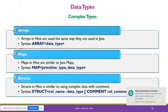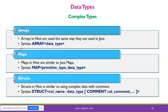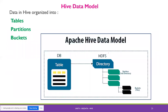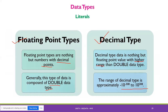Arrays are the same as in other programming languages like Java. The syntax is: array(data_type). Maps, similar to Java maps, have the syntax: map(primitive_type, data_type). Structs are similar to complex data and you can also include comments. So three complex types are available: arrays, maps, and structs. This covers data types in Hive.